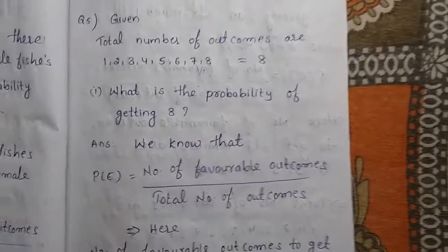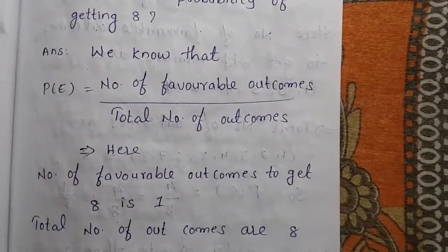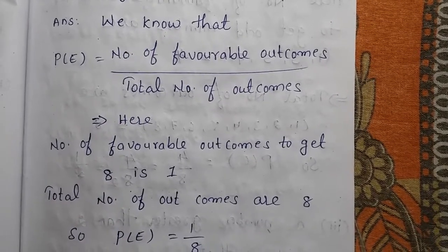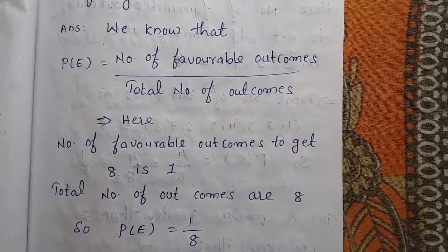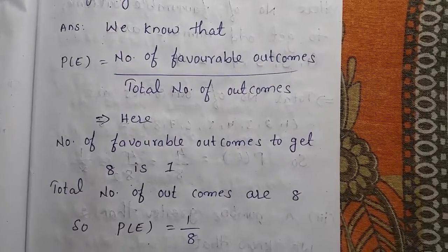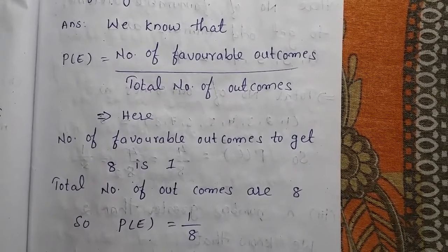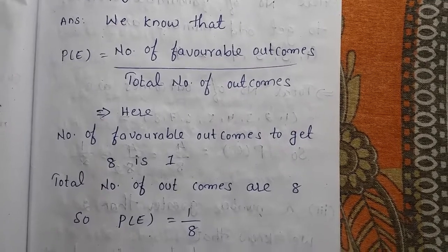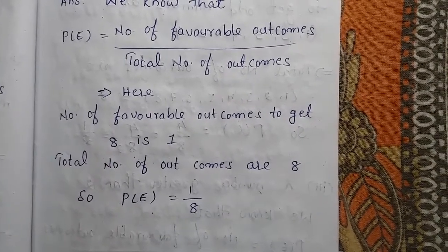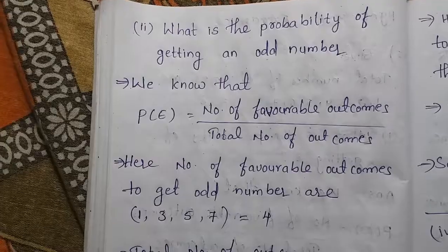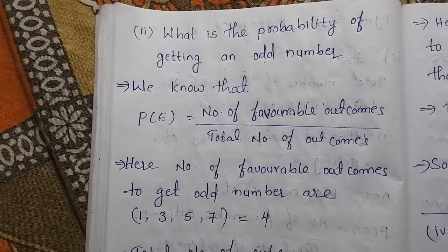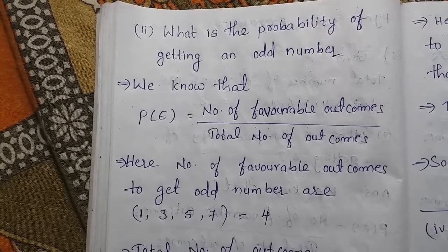Here, the number of favorable outcomes to get 8 is 1, because all have equally likely chances, and total number of outcomes are 8. So the probability of getting 8 is 1 by 8. Next, what is the probability of getting an odd number? Probability is number of favorable outcomes by total number of outcomes.